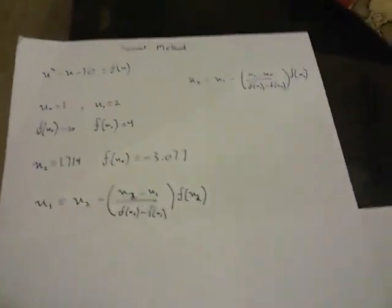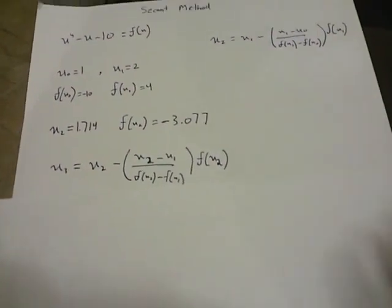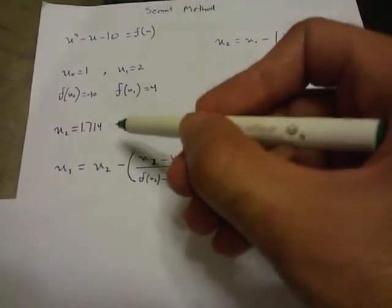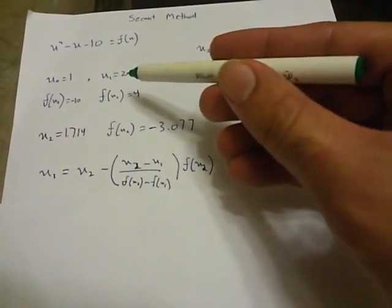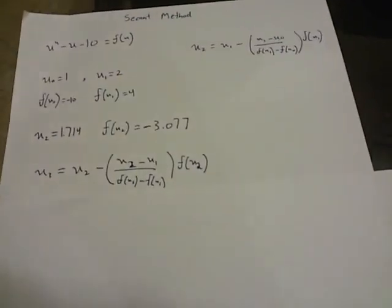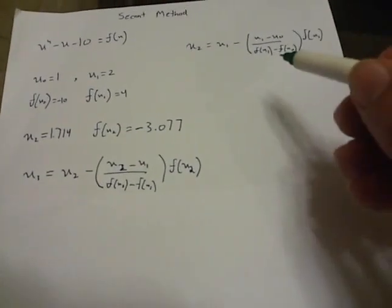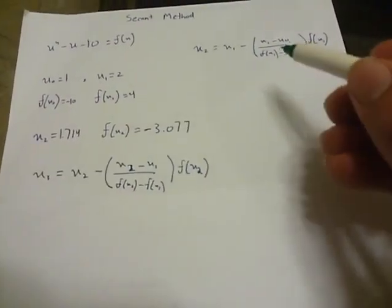Now for x3 we're going to use the values of x2, the one we just found out, and x1. So we use these two values in a modified version of that formula - x1 becomes x2 and x0 becomes x1.